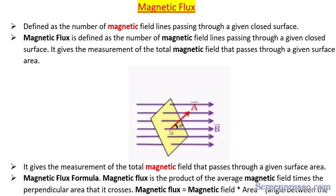Hi friends. In the last session I discussed regarding flux — what is the meaning of flux and what is flux. So we have basic details about flux now. As I already mentioned, there are two types of flux: magnetic flux and electric flux. In this session I am going to cover magnetic flux.